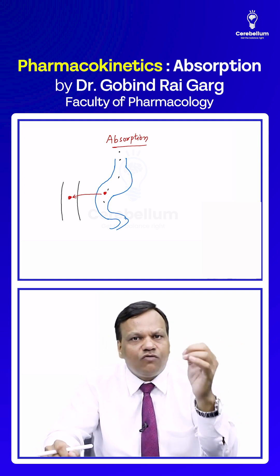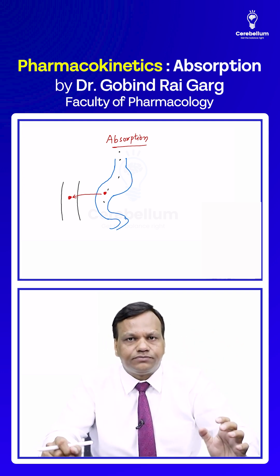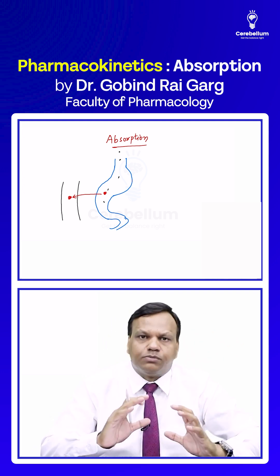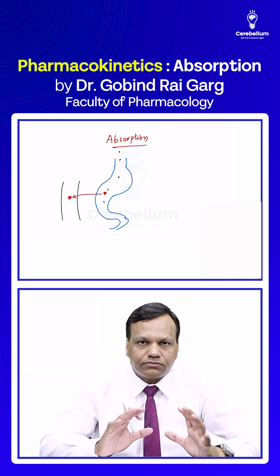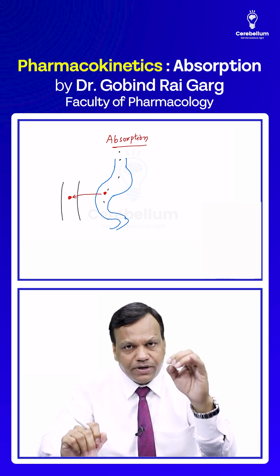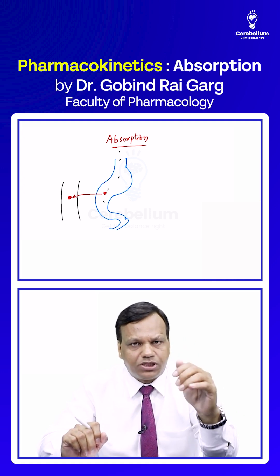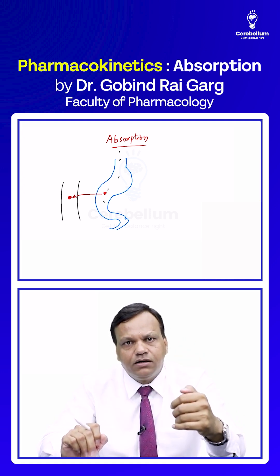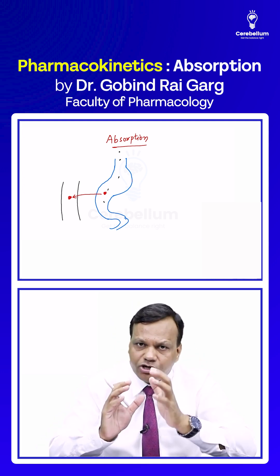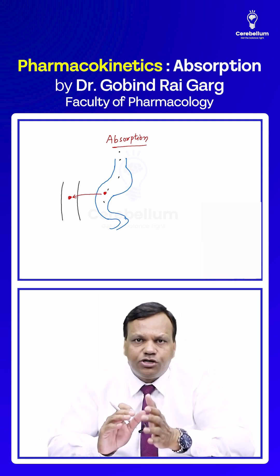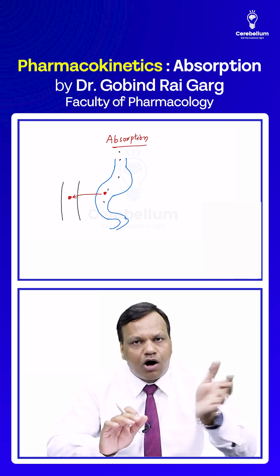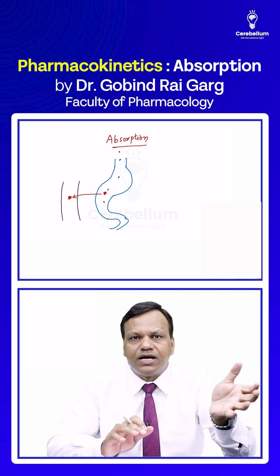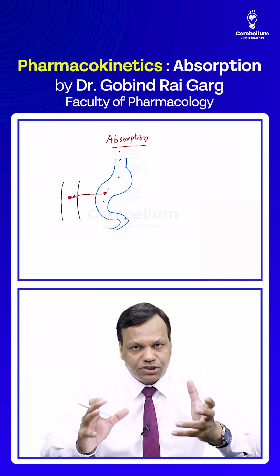So this arrow which we have put — this is absorption. In simple language, absorption is the movement of a drug from the site of administration to the blood. So how it reaches the blood is absorption.